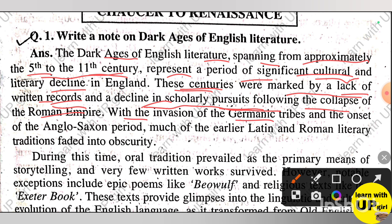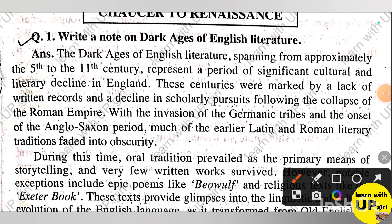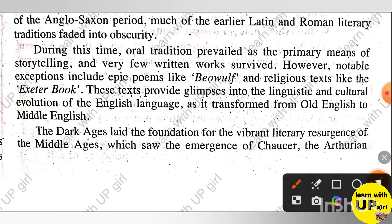With the invasions of the German tribes and the onset of the Anglo-Saxon period, much of the earlier Latin and Roman literary traditions faded into obscurity. When the Anglo-Saxon period began, the earlier Latin and Roman writings largely disappeared.